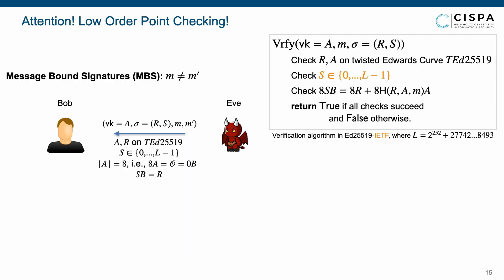The analysis for message-bound signatures is, however, not the case. An adversary can output verification key, a signature (r, s), and two messages m and m', such that the points a and r both are on TED25519, and the positive s is less than l. Then pass the first and second checks.